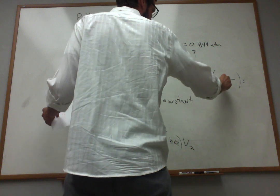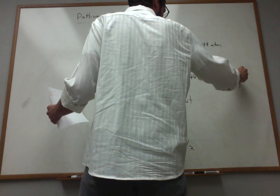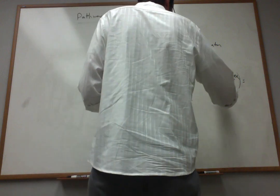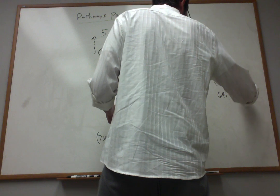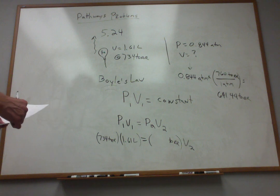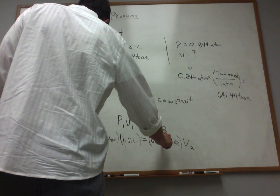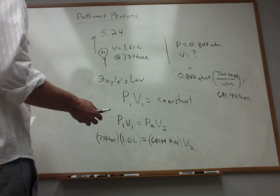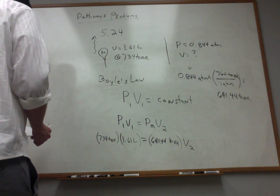And as we've been learning, one atmosphere corresponds to 760 torr. So if I do the math on that, I get 641.44 torr corresponds to 0.844 atmospheres. And I just simply plug that number here, 641.44. I'm not paying too much attention to sig figs at this point. I'm just plugging in the numbers that I've got. And I rearrange and I solve.